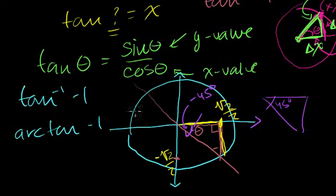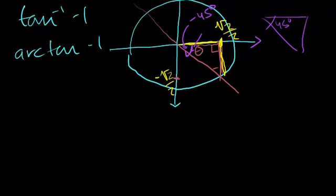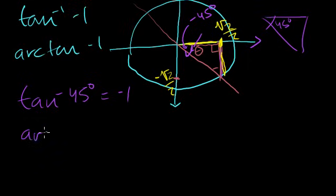So the tangent of minus 45 degrees, let me write that down. So if I'm in degrees, and that tends to be how I think, so I could write the tangent of minus 45 degrees equals this negative value minus square root of 2 over 2 over square root of 2 over 2, which is equal to minus 1. Or I could write the arctangent of minus 1 is equal to minus 45 degrees.